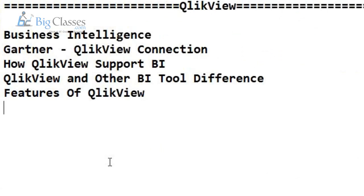What is QlikView and how did it come into the market? QlikView is developed by an organization called QlikTech, founded in Sweden in the year 1993. In the initial stage it was a little unstable, but it picked up speed from 2010 onwards.